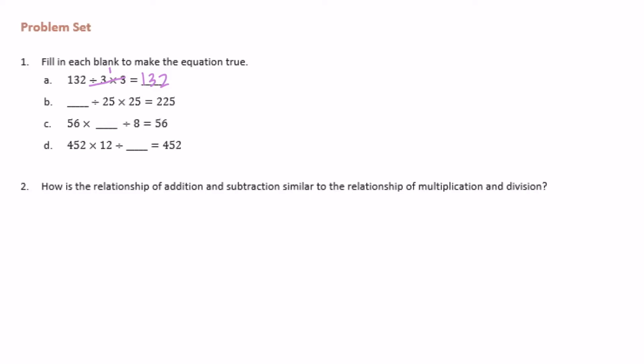Remember that a times b divided by b is equal to a, or a divided by b times b is always equal to a. So those two are identities and this follows that pattern where a is 132 and b is 3.